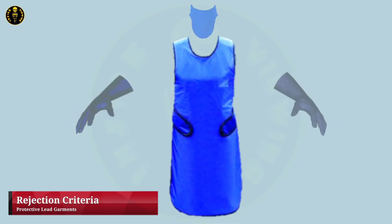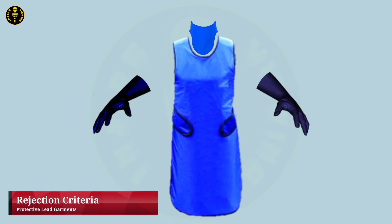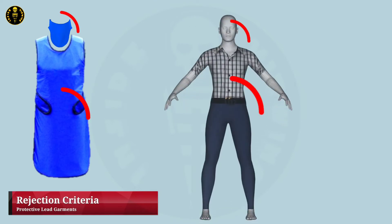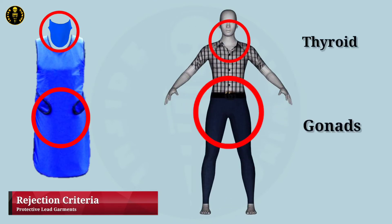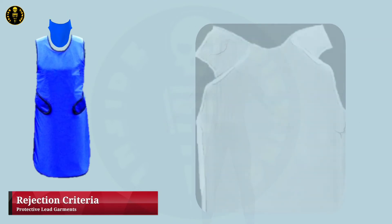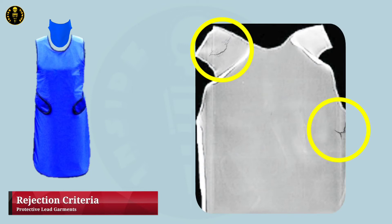Rejecting a lead apron or any other radiation protection equipment completely depends on the location and size of the defects. It has been recommended that aprons should be replaced if the sum of defects over non-critical areas exceeds 670 mm² or a 29 mm diameter circular hole.